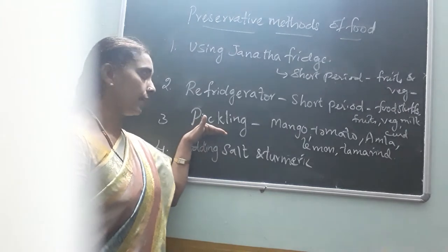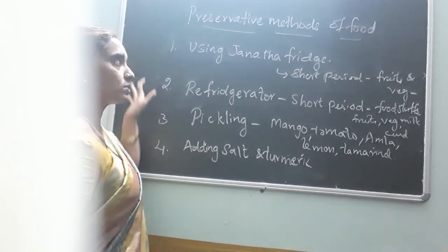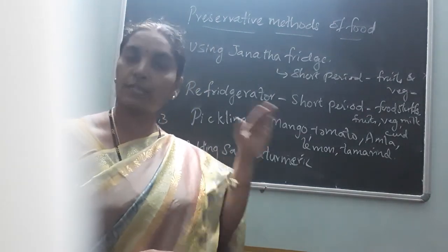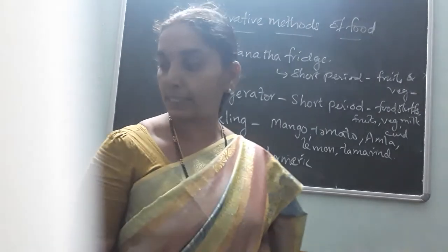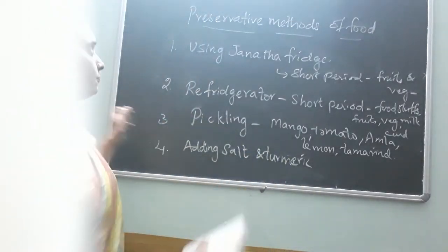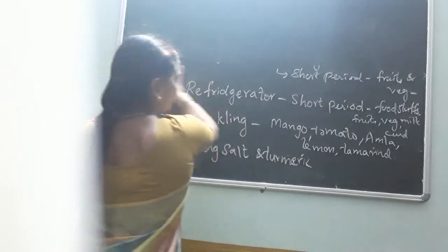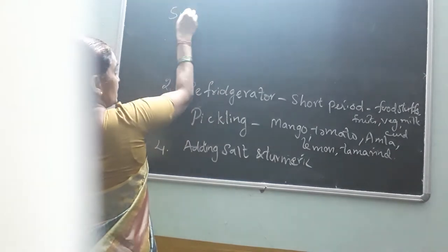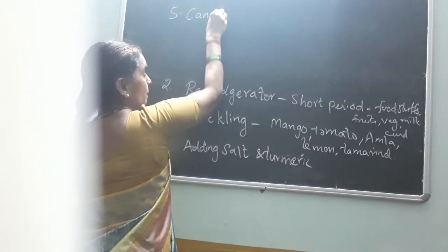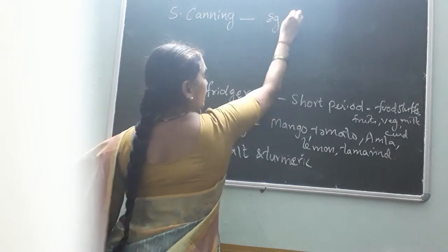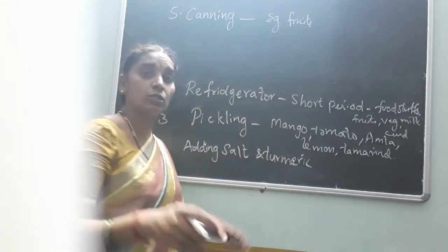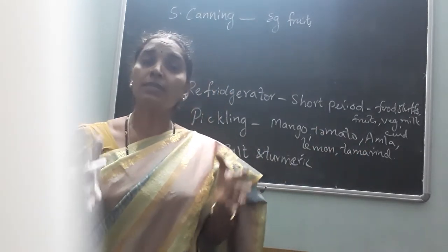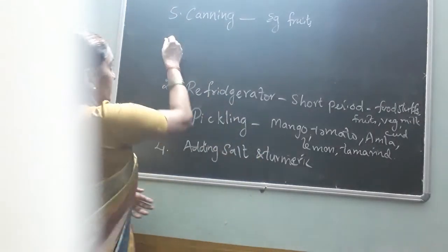Is it clear? Those are the items used for the pickling process. These four steps — did you write them down? First listen to the topic, then note it down. The fifth point is the canning process. From different places, fruits are brought to your houses. The fruits are canned — sealed in certain cans and transported from one place to another. So this is one of the processes of preservation of food.